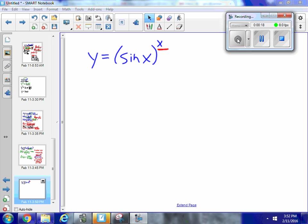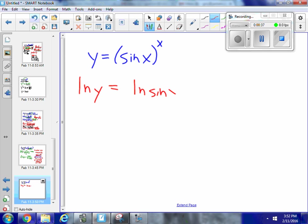So the way that I'm going to get x down from being an exponent is I'm going to take a logarithm of both sides. So I'm going to go ln y, I'm not doing the derivative yet, is equal to ln sine x to the x power.